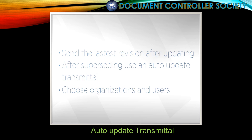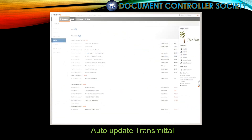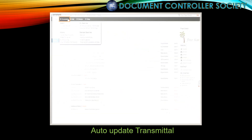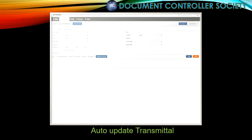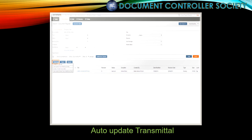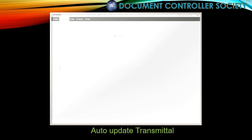So let's get started. Click Documents on the Module menu, and under Search click Document Register. First up, we have to find the document we've superseded in the register. We need to complete some of the search criteria fields to narrow our search so we can quickly find the document we want. We select the checkbox for the document we want to transmit an auto-update for, and click Auto-Update.